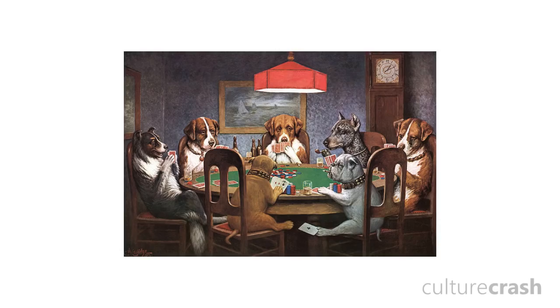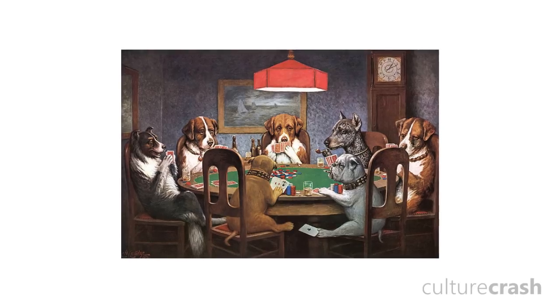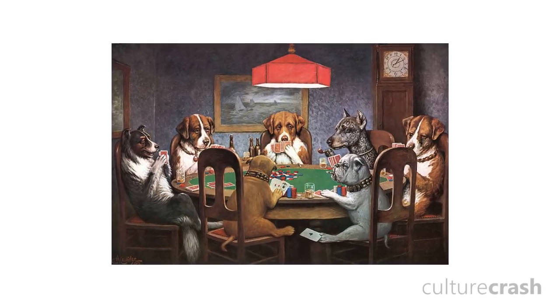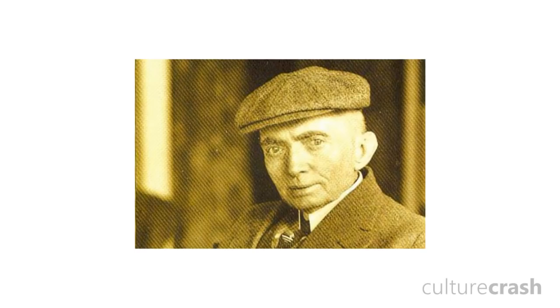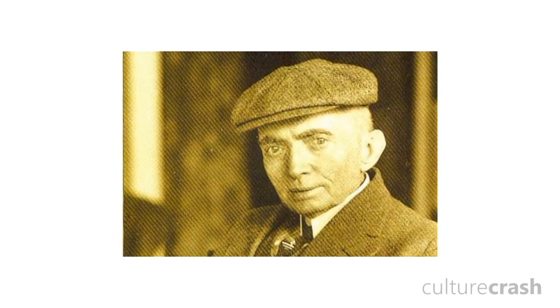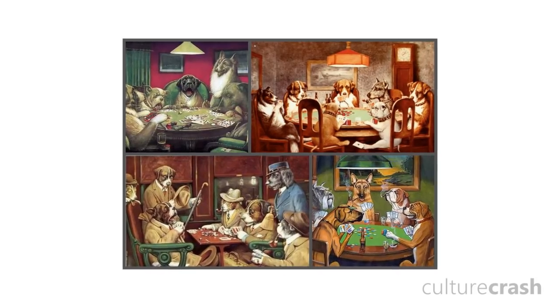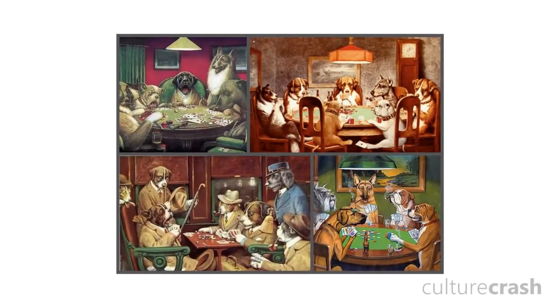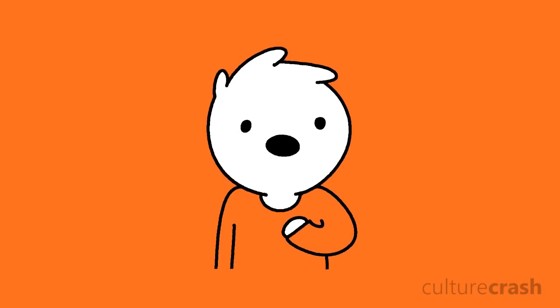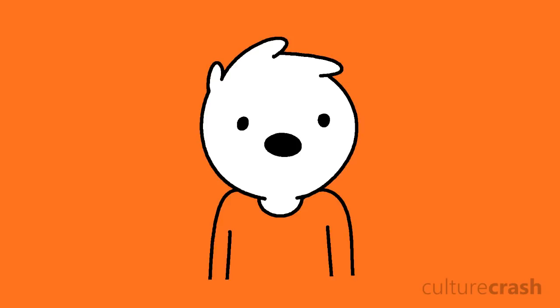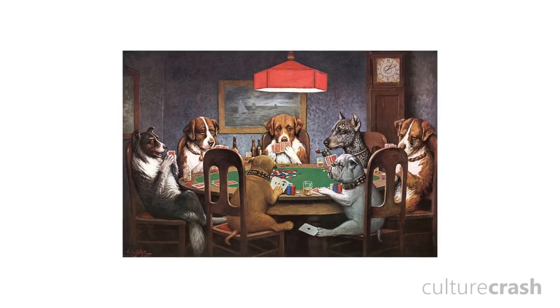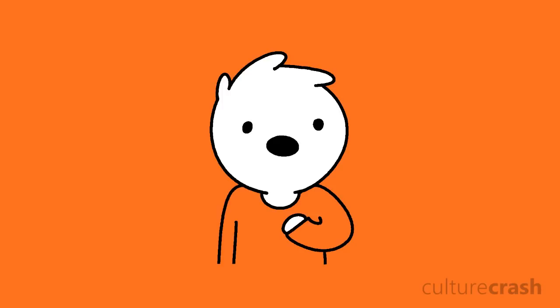Number 4: Dogs Playing Poker by Cassius Marcellus Coolidge. Dogs Playing Poker is a collection of paintings created between 1894 and 1910 by American artist Cassius Marcellus Coolidge, more commonly known as CM Coolidge. The 16-piece collection was commissioned by Brown and Bigelow Co. to sell their cigars, but the endearing and mischievous images quickly became iconic. A common misconception is that Dogs Playing Poker is a single painting — most often people are actually thinking of one painting in the collection titled A Friend in Need.